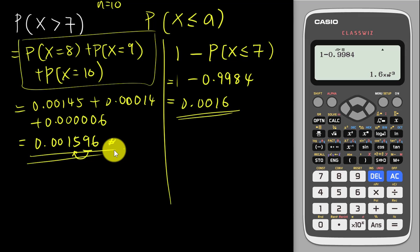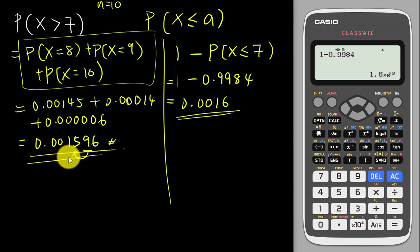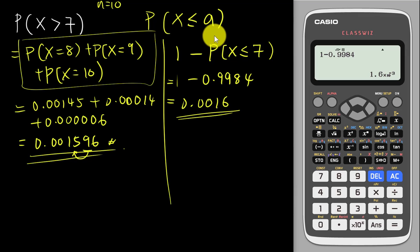So there are two methods: first, use Binomial PD with the List button to get values for x = 8, 9, 10 and add them manually. Second, use Binomial CD with the complement: 1 minus P(X ≤ 7). Remember, Binomial CD always uses 'less than or equal to', so use the calculator carefully for this topic.